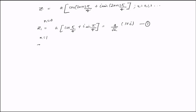For n = 1, we get z₂ = a times (cos(3π/4) + i·sin(3π/4)). Evaluating this using standard trigonometric values gives z₂ = (a/√2)(−1 + i).